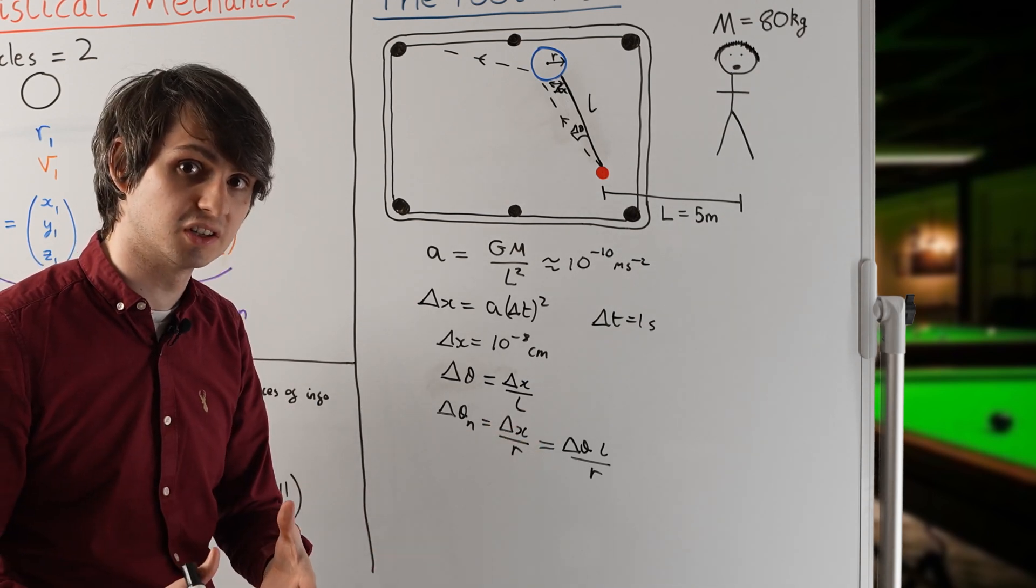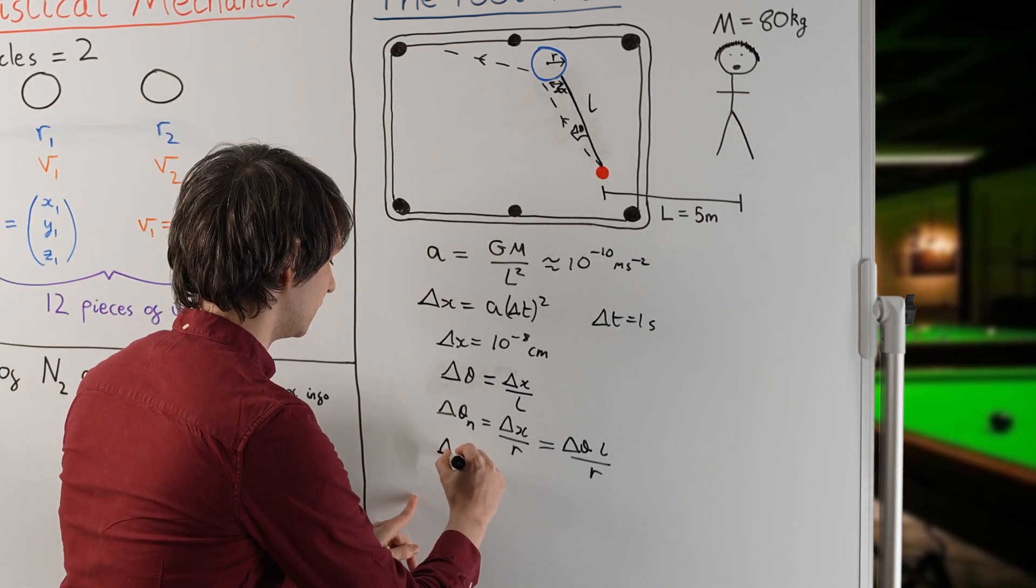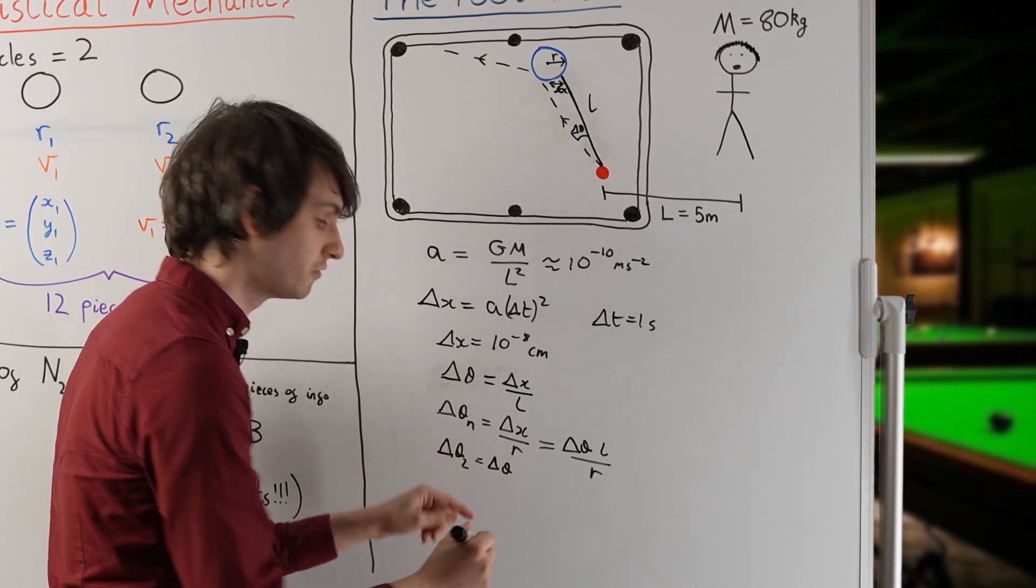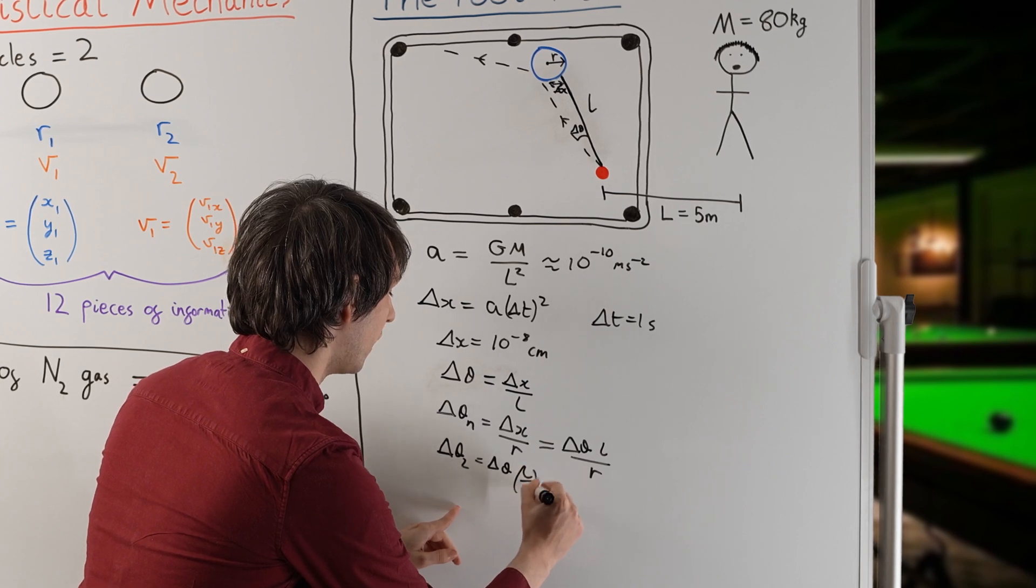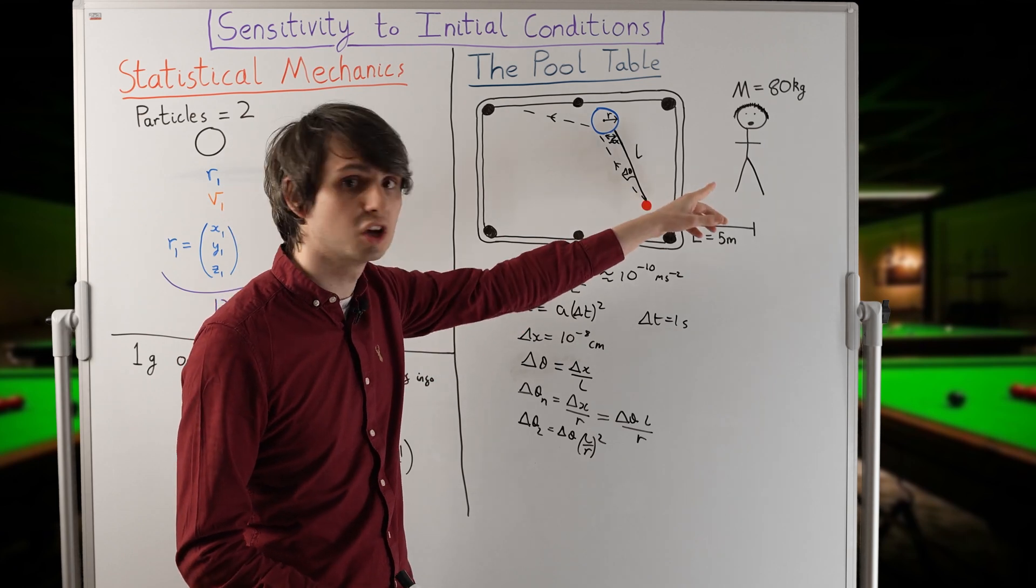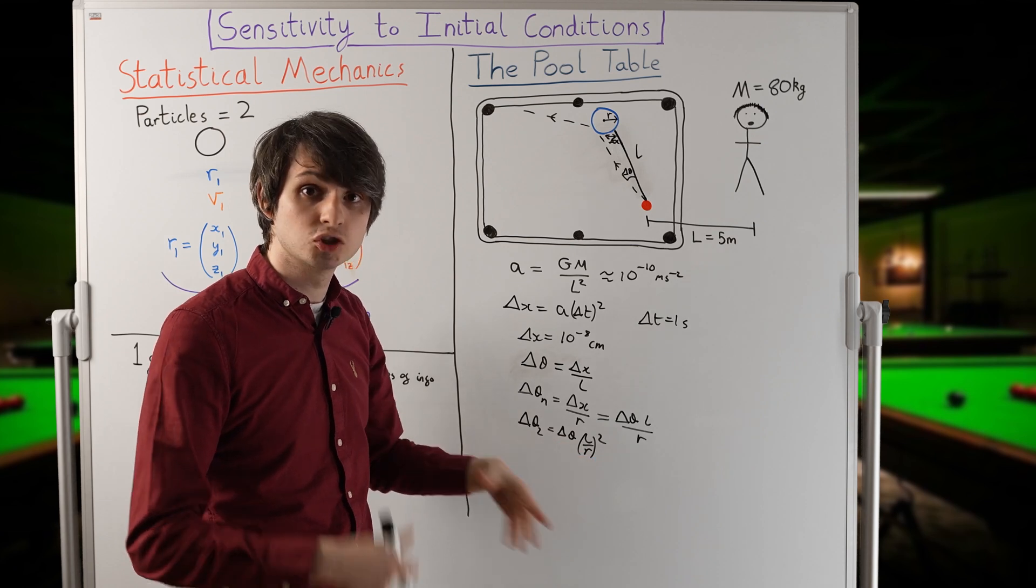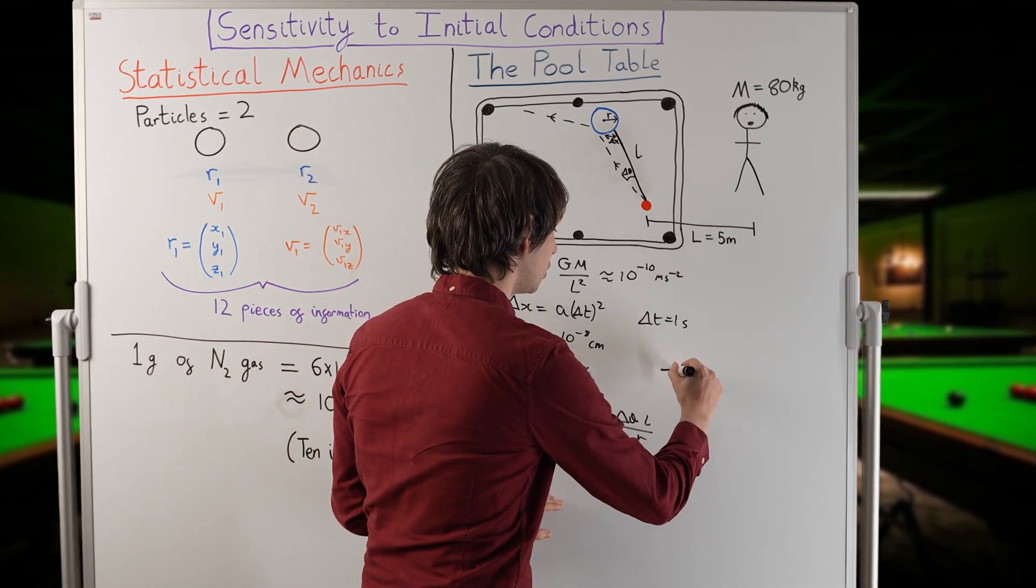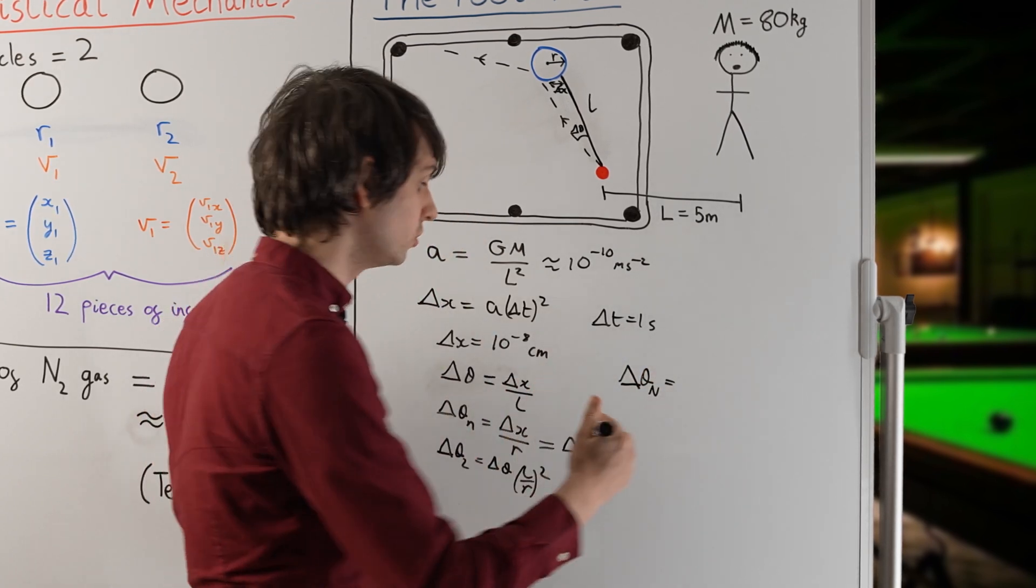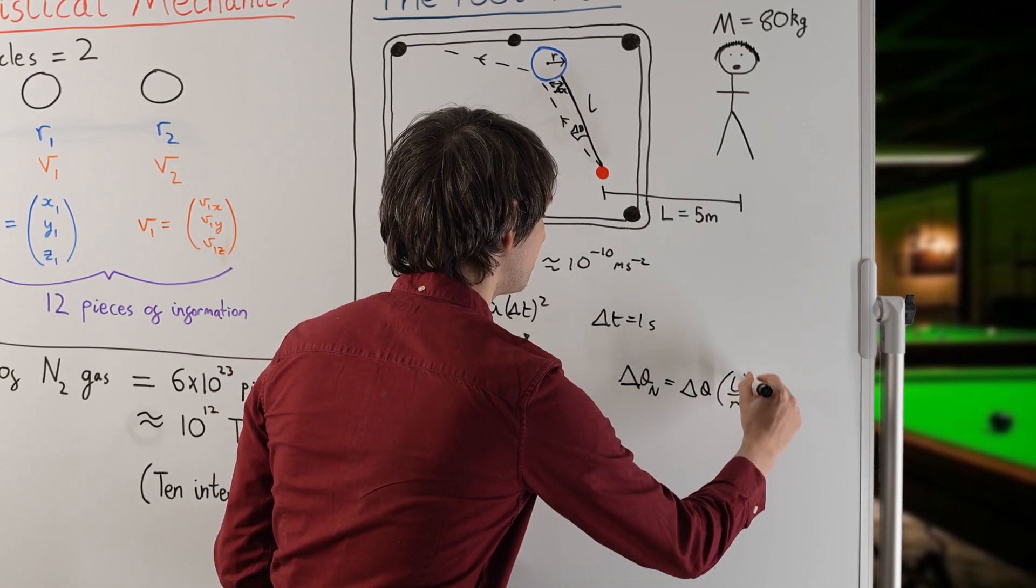That means that if we repeat this calculation and see what the angular deflection is after another collision, let's say delta theta 2, then this will be given in terms of the original angular deflection times a factor of l over r squared. So in other words, after every collision, the initial deflection caused by your presence in the room will be amplified by a factor l over r. So if we have n collisions in total, the total angular deflection, delta theta n, is going to be equal to the initial angular deflection, delta theta, times a factor l over r, all to the power n.